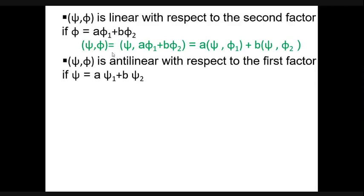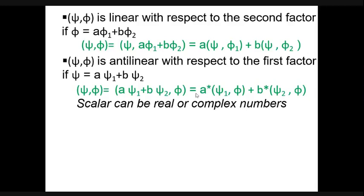The scalar product is anti-linear with respect to the first factor. If the first factor is a linear combination A*psi1 plus B*psi2, then the scalar product comes out as A**(psi1, phi) plus B**(psi2, phi), where A* and B* denote complex conjugates. So if A and B are complex scalars, the scalar product is anti-linear with respect to the first factor.